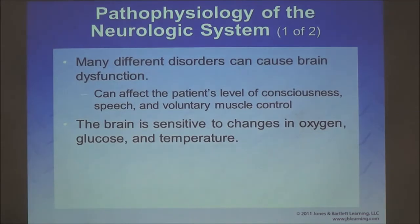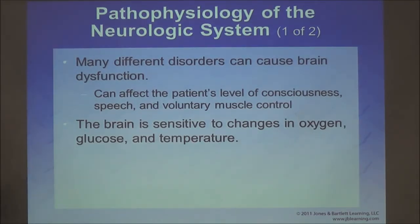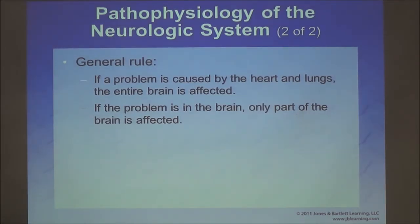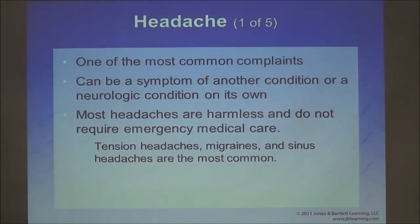A disorder of the brain is serious. The brain is very sensitive to decreases in oxygen, glucose, and temperature. When under stress, patients begin to have a change in behavior, mood, and ability to communicate. If there's a problem with the heart and lungs, the entire brain is affected — that's a change in normal behavior. If the problem is in the brain itself, possibly only one part is affected. Headache is one of the most common complaints and can be nefarious — ranging from minor muscular tension headaches to brain tumors, ruptured aneurysms, or non-traumatic brain injuries.